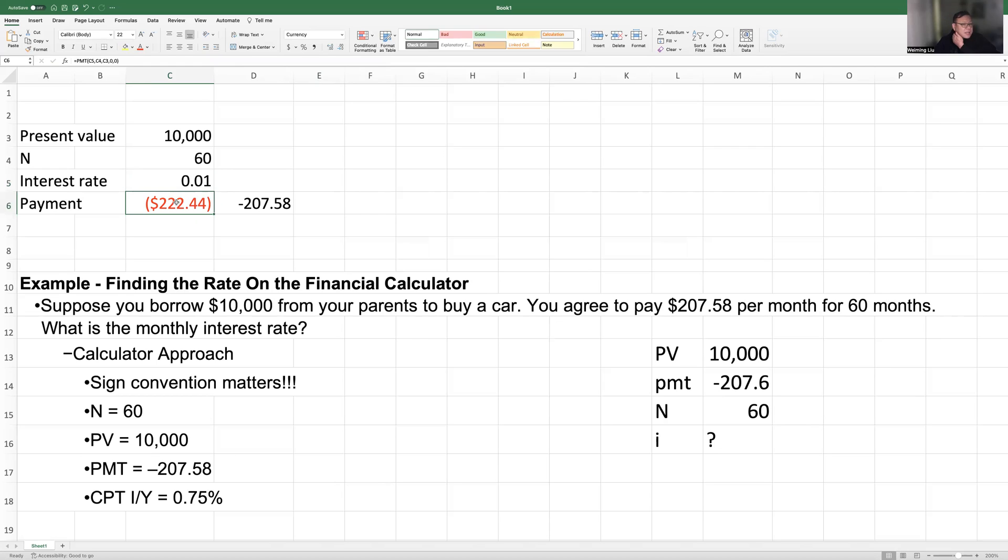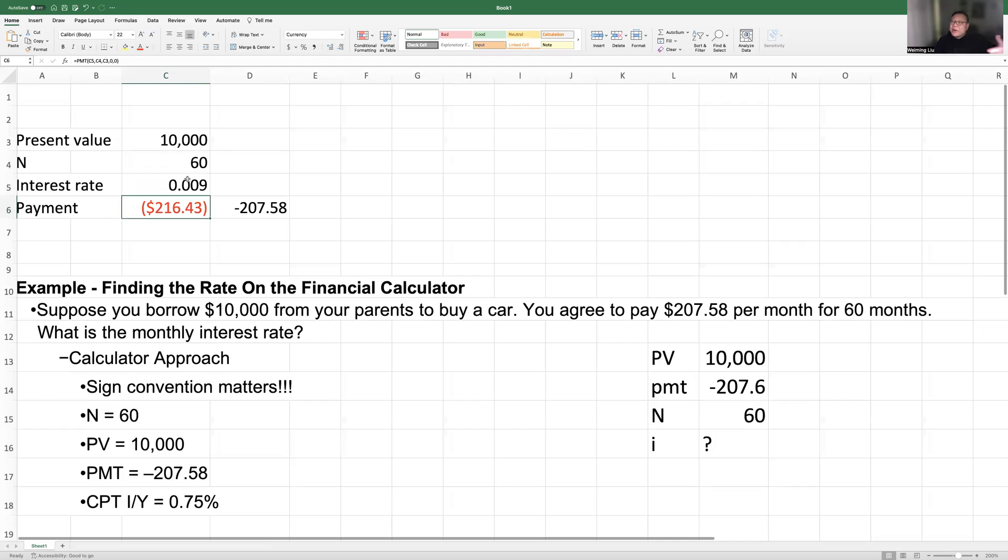So now it's getting closer. So I need to keep doing this. It's still too big. 0.009. It's getting closer. So you can see, you just use this trial and error balance. So once you put a 0.0007.